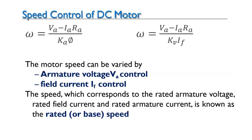One important note: the correct nomenclature is armature voltage control — not armature current control — and field current control — not field voltage control. Keep these terms in mind: it is armature voltage control and field current control.